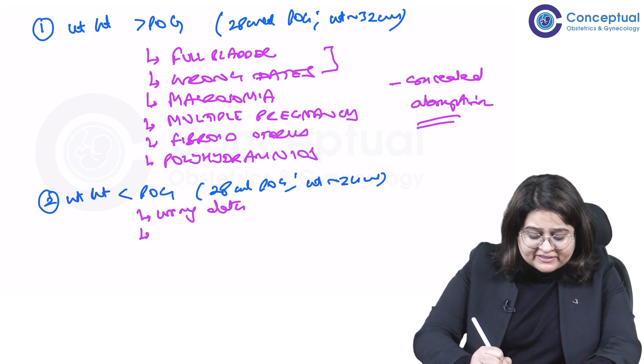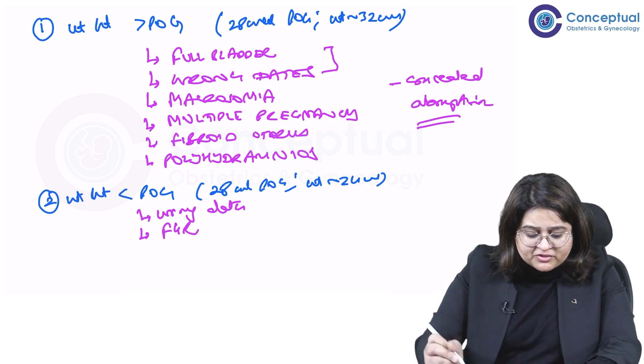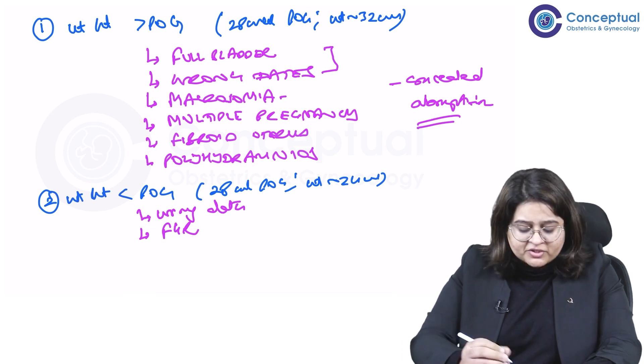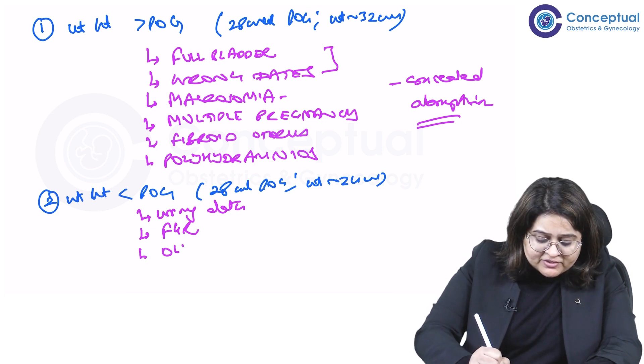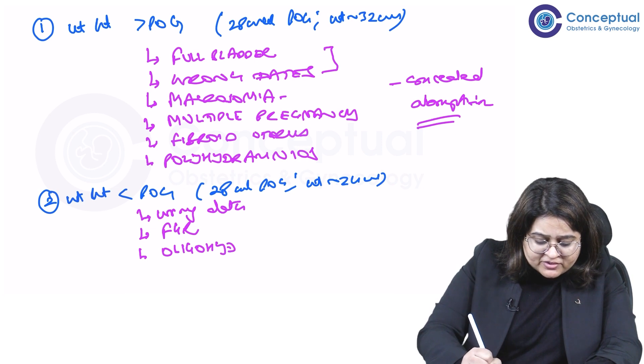What else? Then start thinking of things like maybe it's fetal growth restriction. So the opposite of macrosomia is fetal growth restriction. The opposite of polyhydramnios is oligohydramnios.